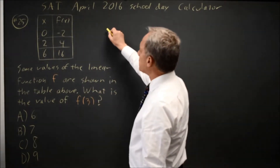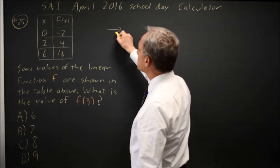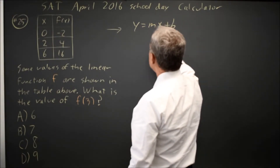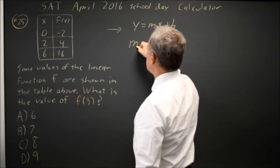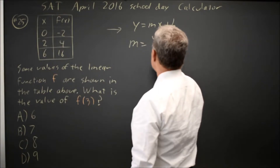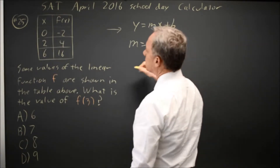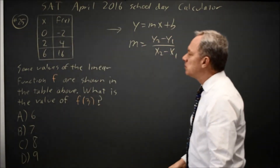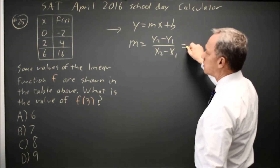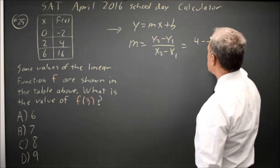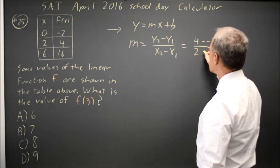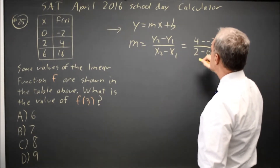I'm going to find the equation of the linear function: y equals mx plus b, where m equals y2 minus y1 over x2 minus x1. Taking the two points at the top of the table, the y values are 4 and negative 2, and the x values in the same order are 2 and 0.